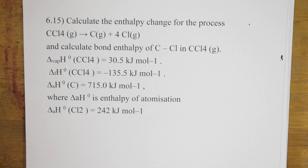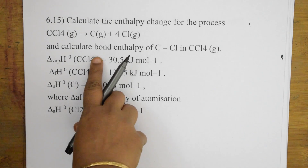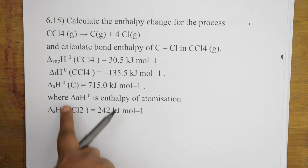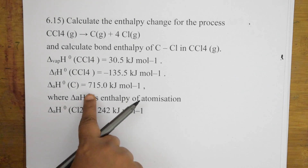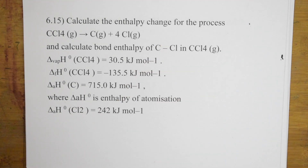Let me move on to question 6.15. This question asks us to calculate the enthalpy change for the process: CCl₄ → C + 4Cl, and also to calculate the bond enthalpy. They've given us the standard enthalpy of vaporization for CCl₄, standard enthalpy of formation for CCl₄, and standard enthalpy of atomization for carbon. We'll continue with this in the next video.